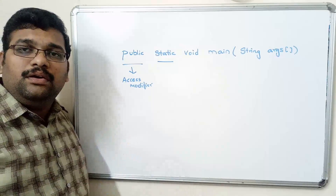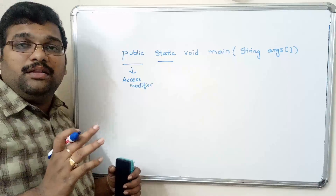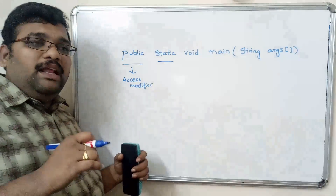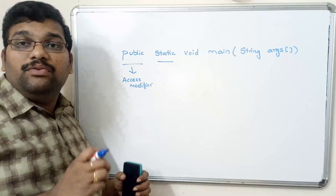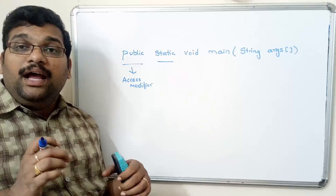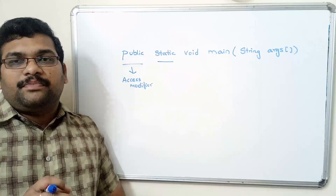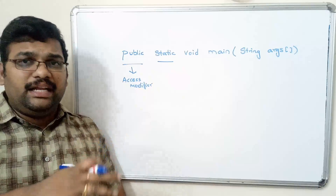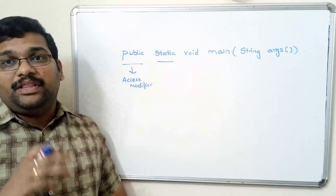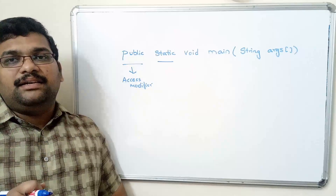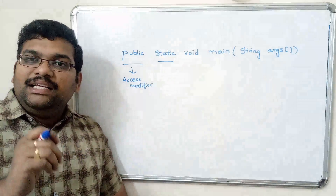In previous sessions we explained static variables, static methods, and the static block — go through that to understand the importance of static. Normally a class consists of variables and methods, and to access them you compulsorily have to create an object. Those are called instance variables and instance methods. Coming to static variables — a variable declared as static can be accessed directly. Similarly, static methods can also be executed directly without creation of any object, or by using the class name. Main is also one type of method.